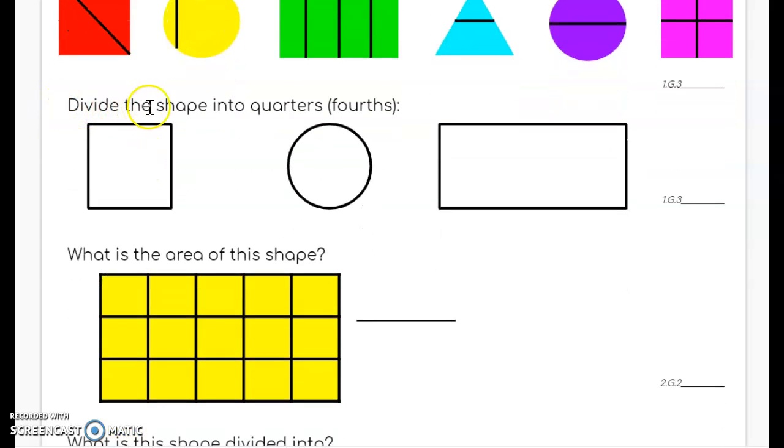The next section says divide the shape into quarters or fourths. You have three shapes that you need to divide into quarters or fourths. Take your pencil and divide them into fourths.